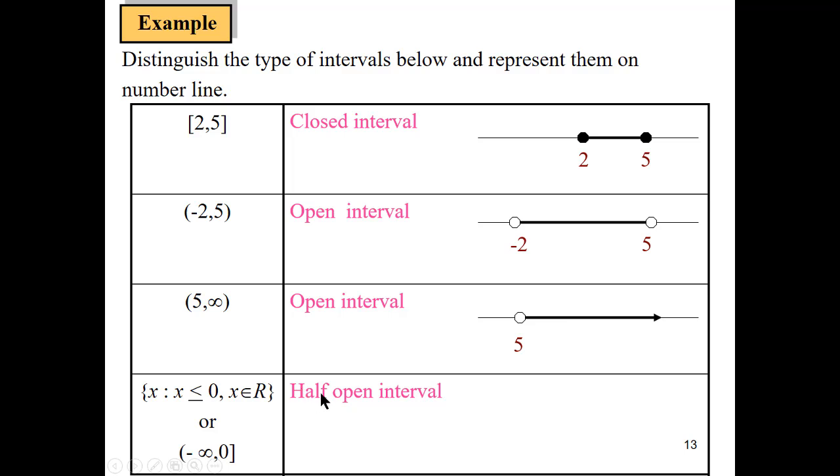Next we have half open interval where we have 0 is included, but negative infinity is always a round bracket. So we're going to draw 0 as a dense circle to negative infinity until 0 because 0 is included.